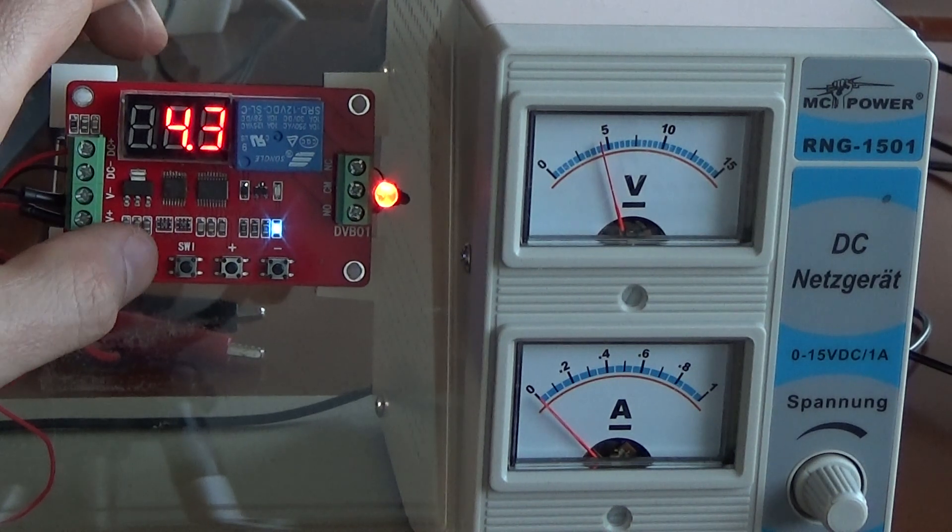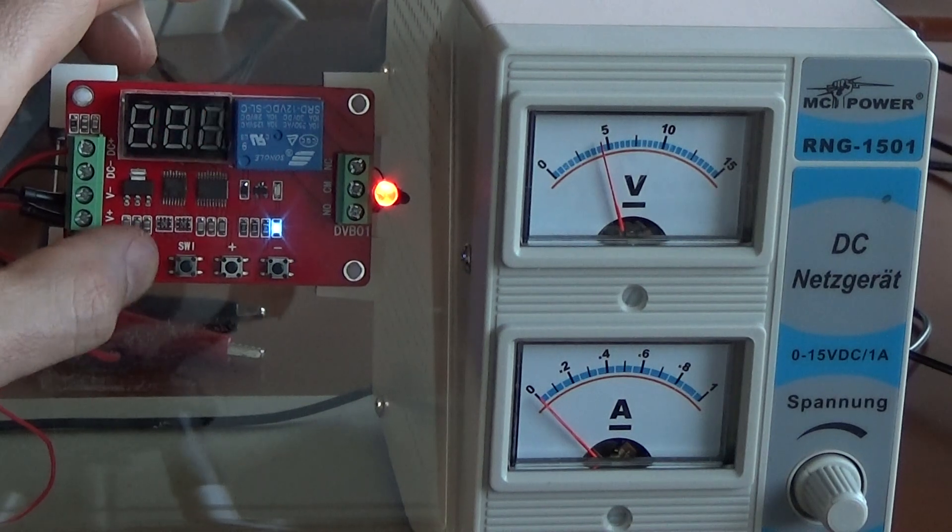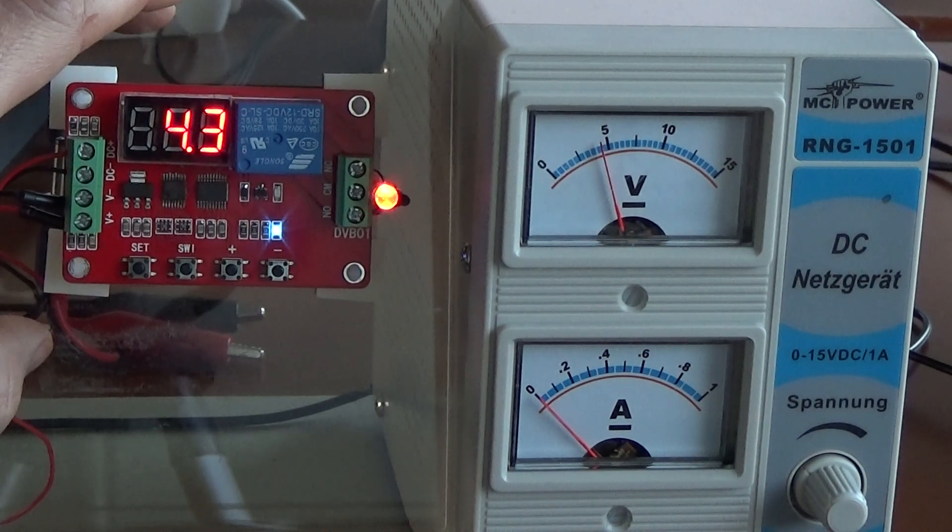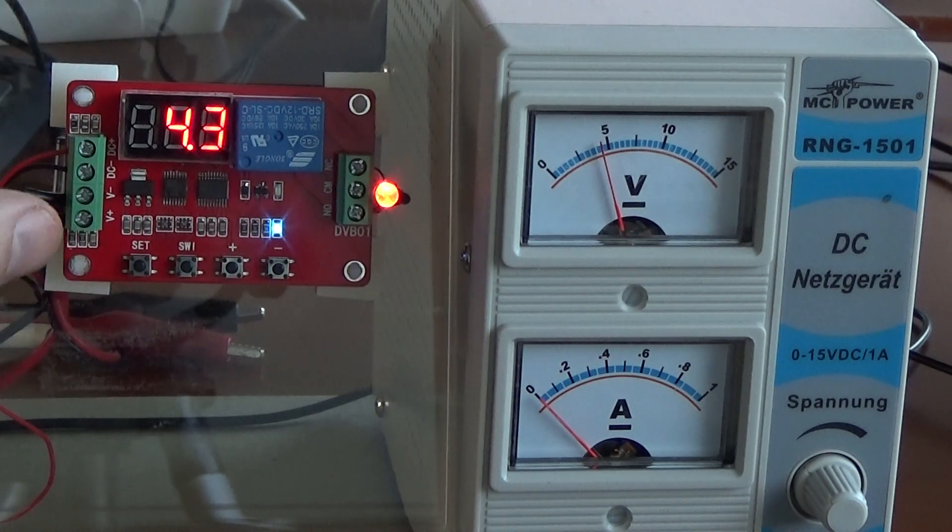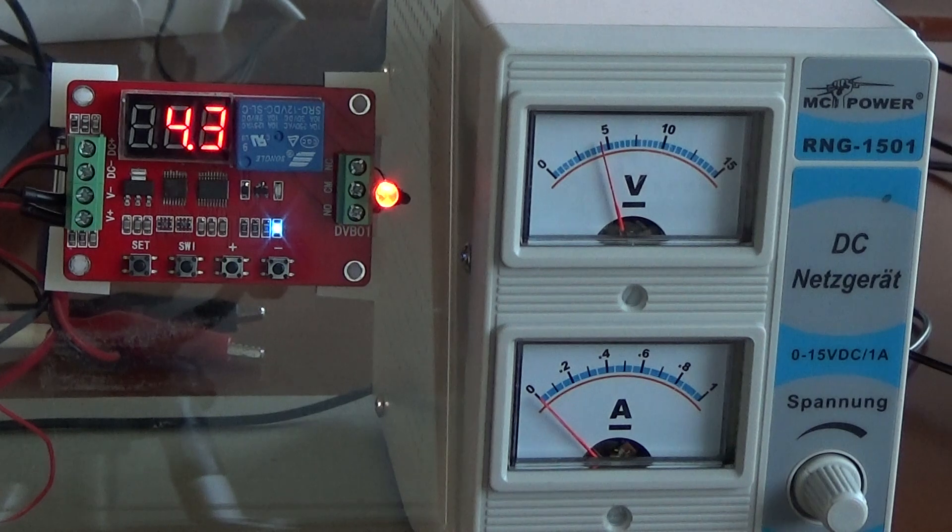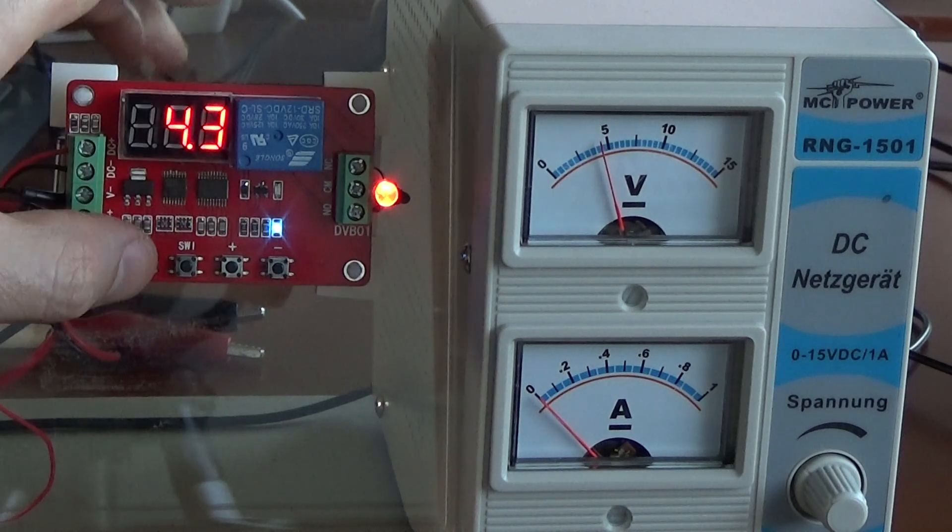You can switch on the display by clicking the set button once, like this. Once you are finished with your programming and you don't want to use extra current for the display, you can just switch it off like that.